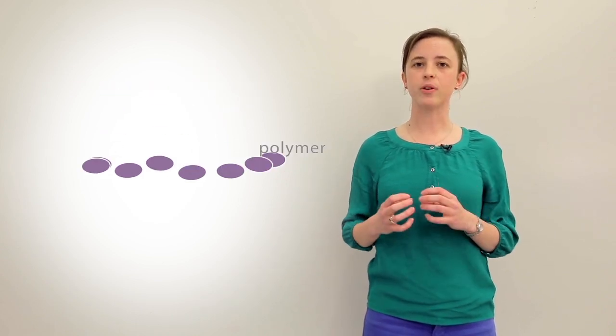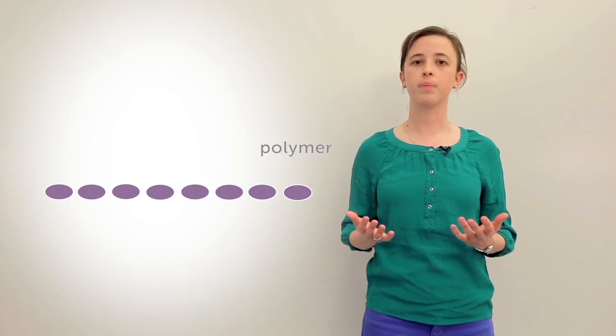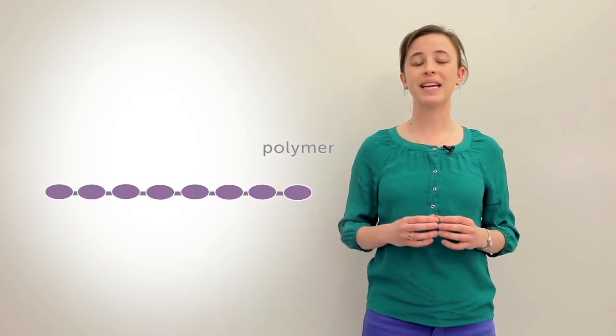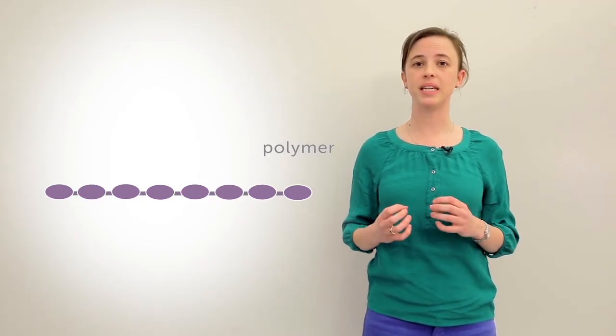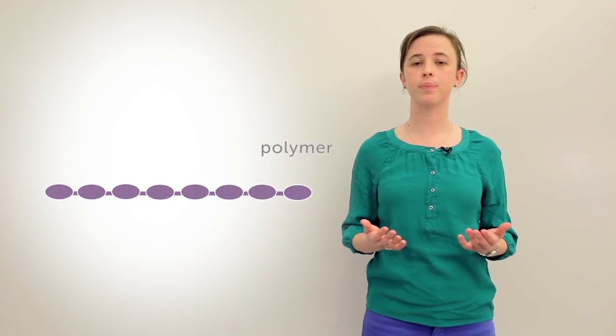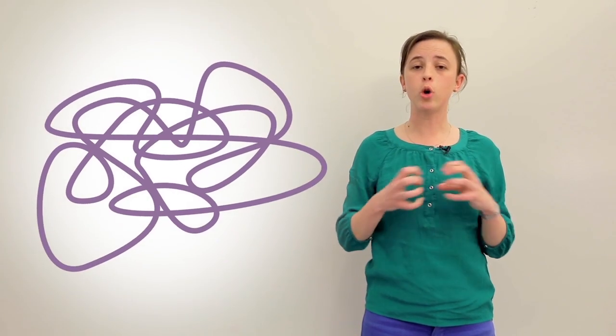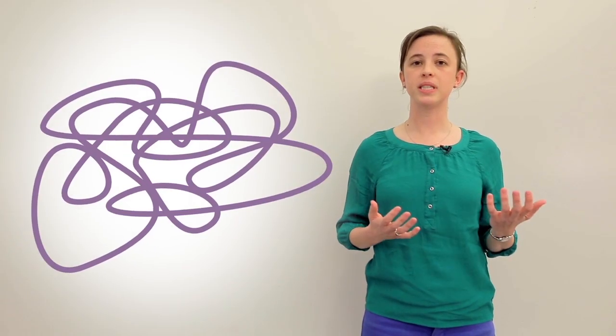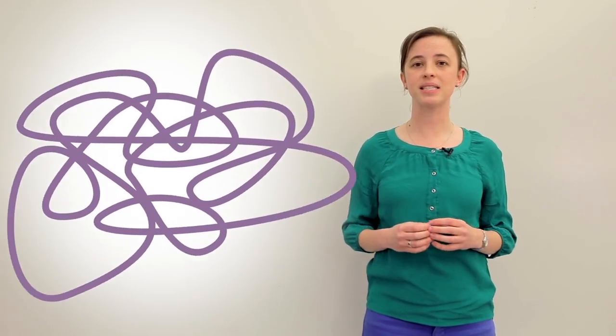When monomers link together they form a chain called a polymer. You can think of a polymer like a necklace made up of individual beads where each bead is a monomer. Sometimes when a bunch of polymer chains tangle together they can pull on each other and create a strong material. And that's what happens in plastics.